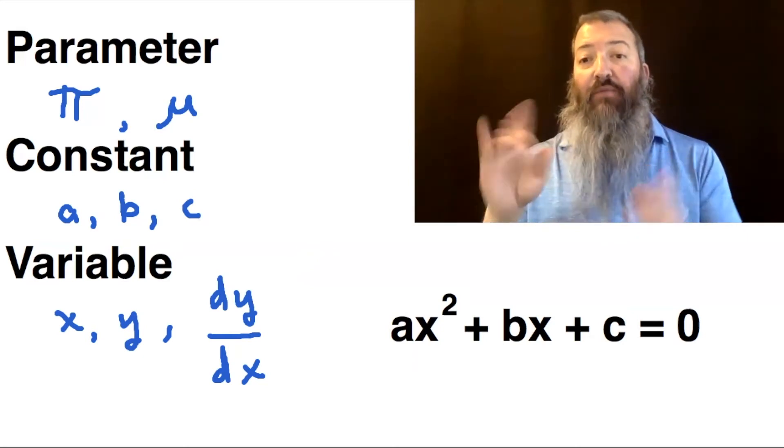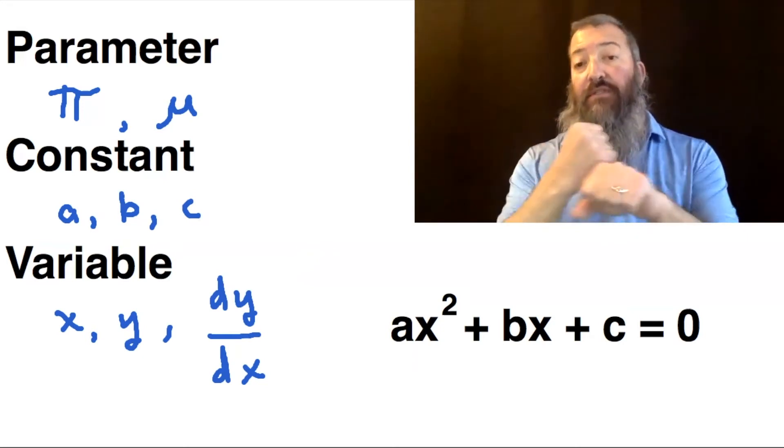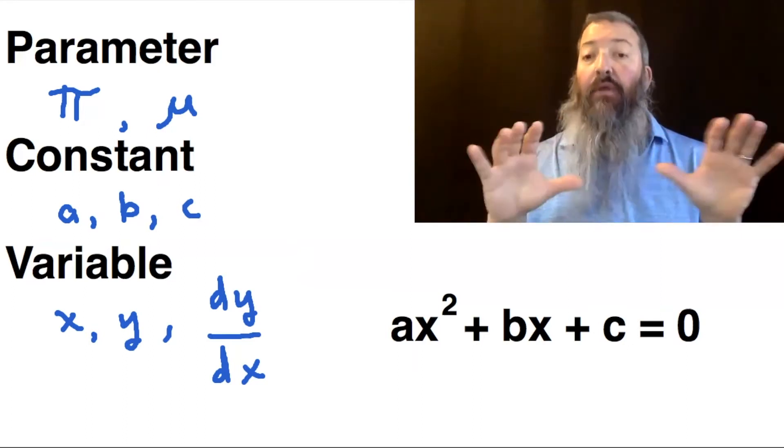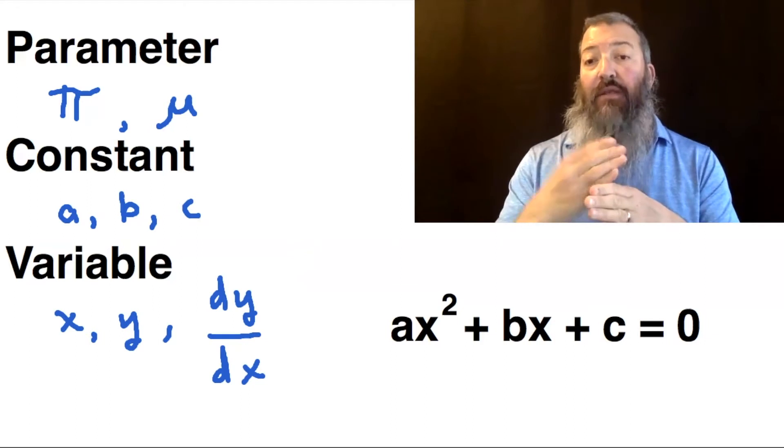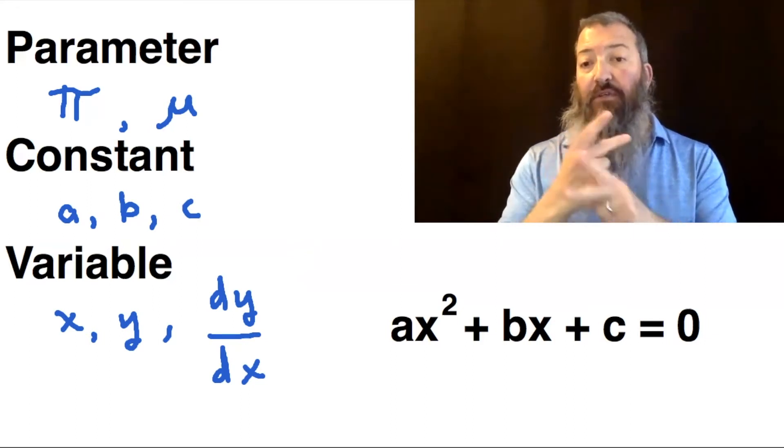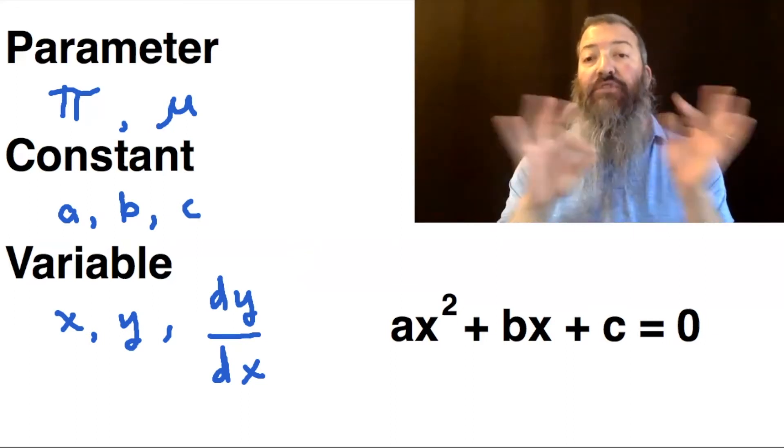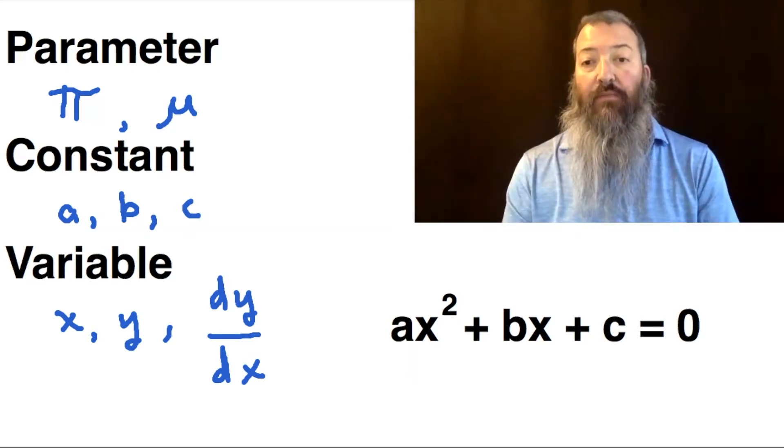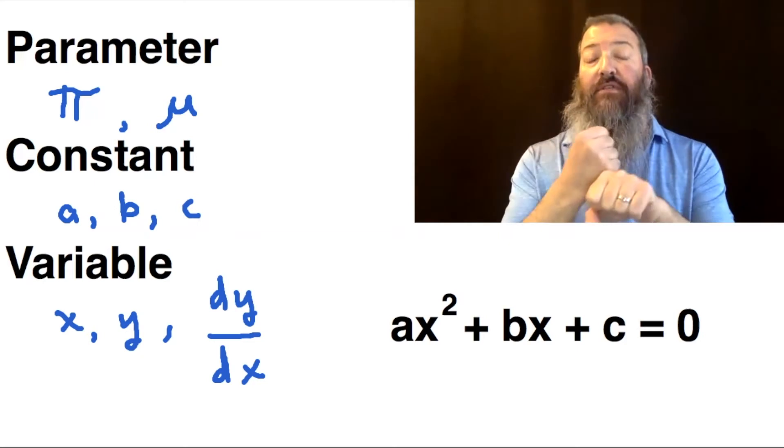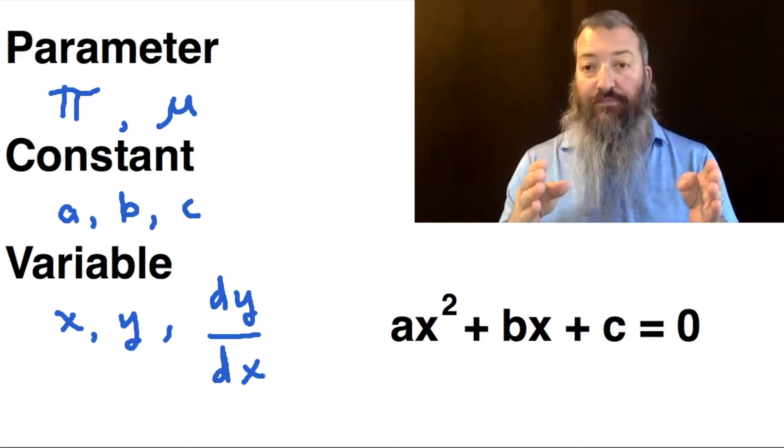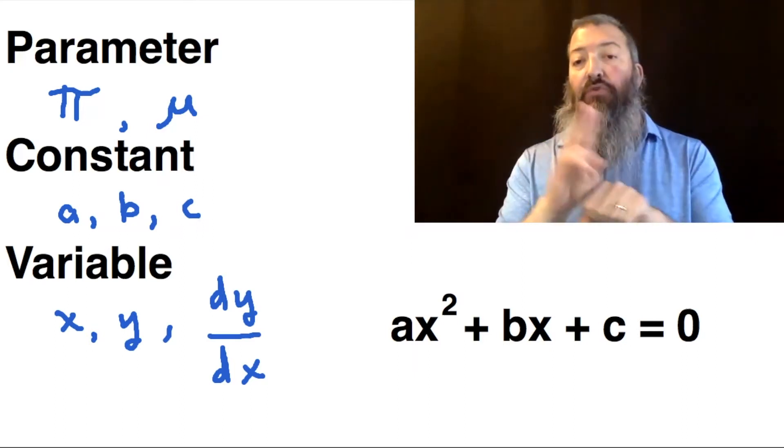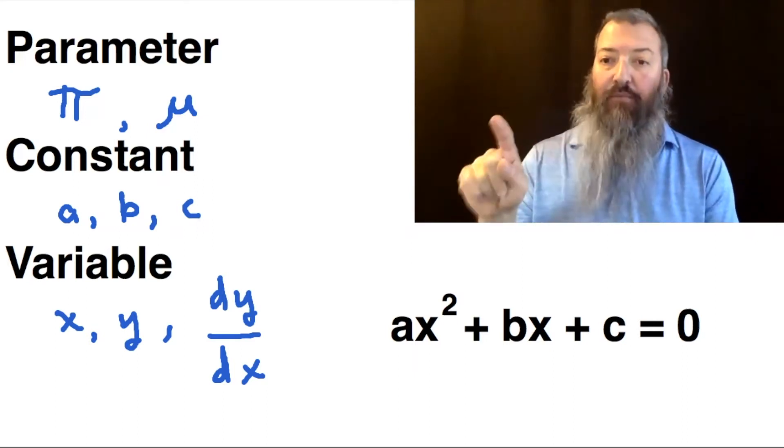Another example would be mu, which in statistics represents a population mean. The population mean is very difficult to compute because you would have to sample everyone or everything within the population to do it. So often, statisticians approximate that parameter using the variable x bar.